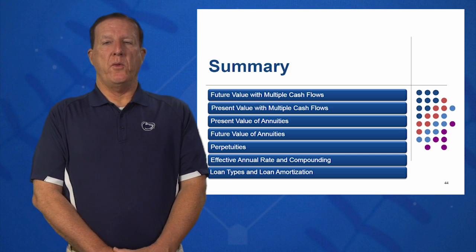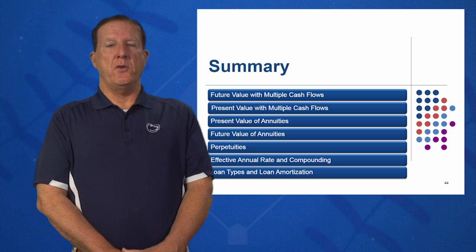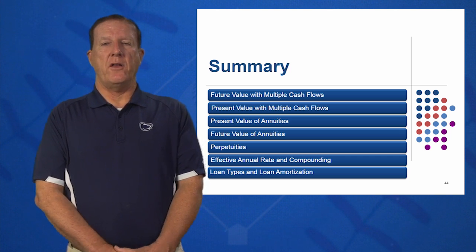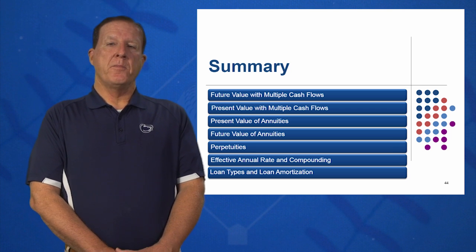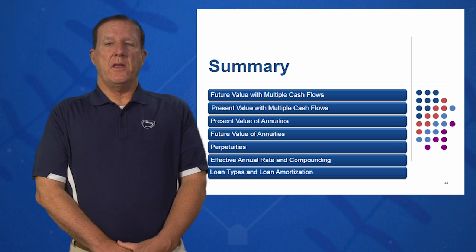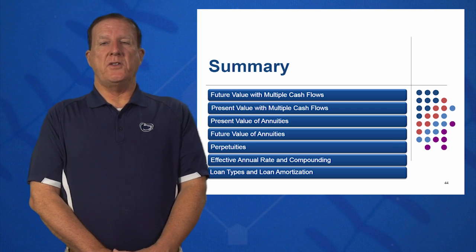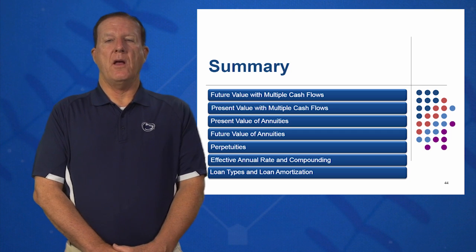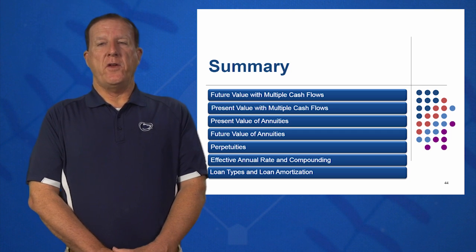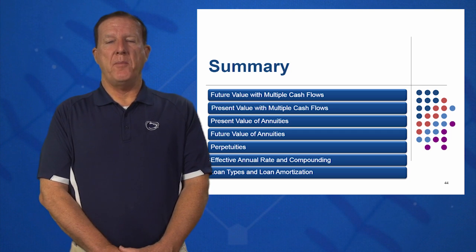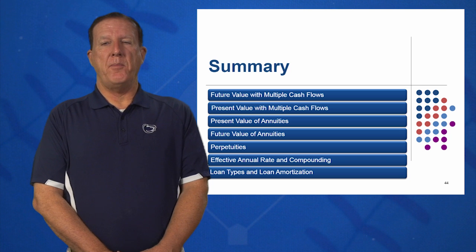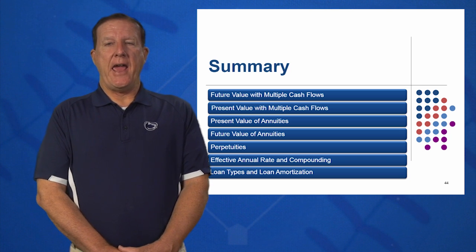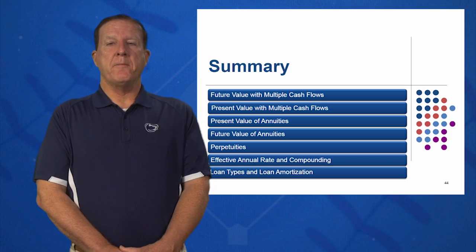The fifth learning objective: we looked at perpetuities — the present value of a perpetuity, an annuity that goes on forever, is C over R. In learning objective number six, we looked at EAR and compounding. If we see the words compounded annually, compounded daily, or compounded monthly, how do I calculate the EAR? We gave you an equation for that.